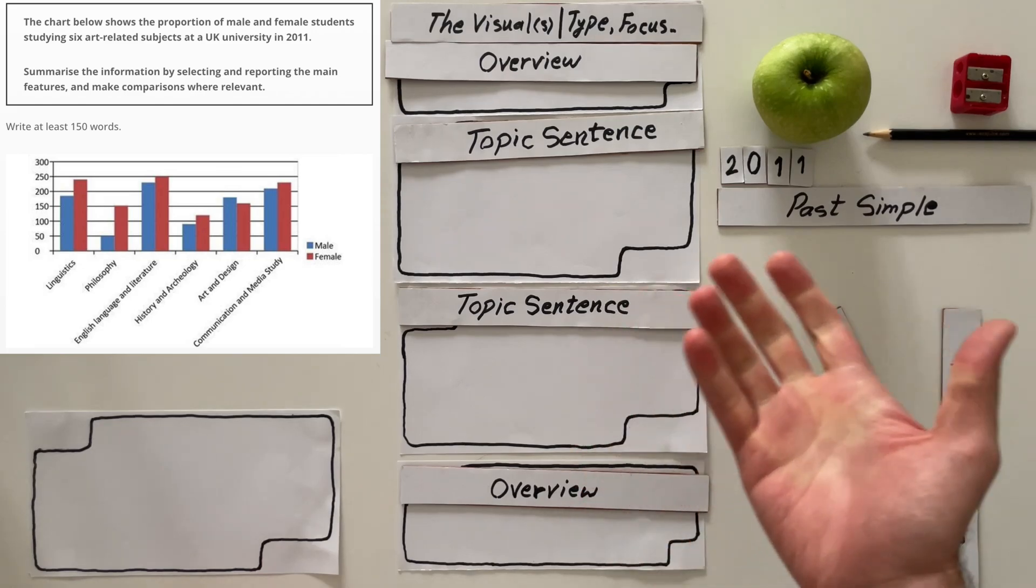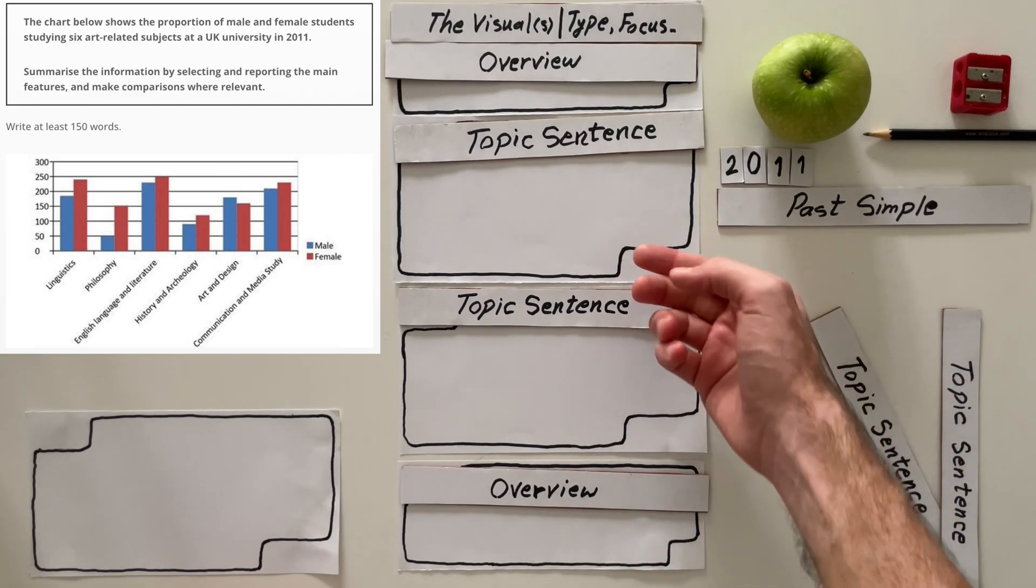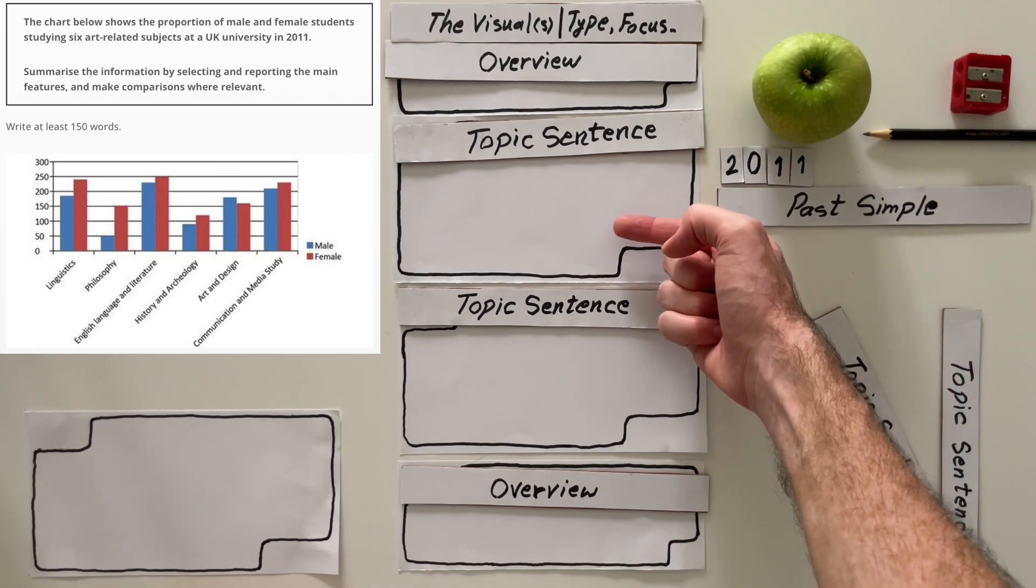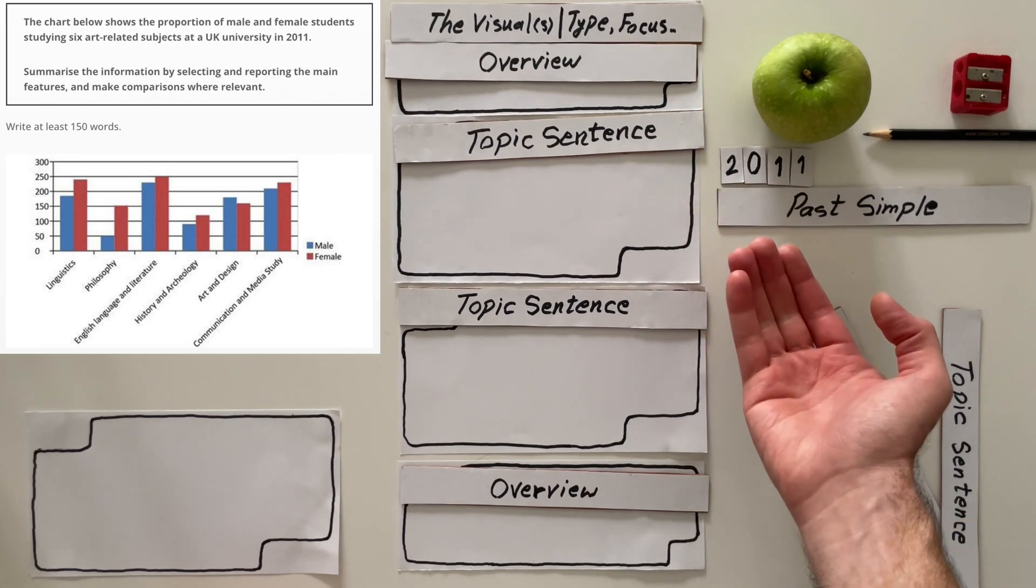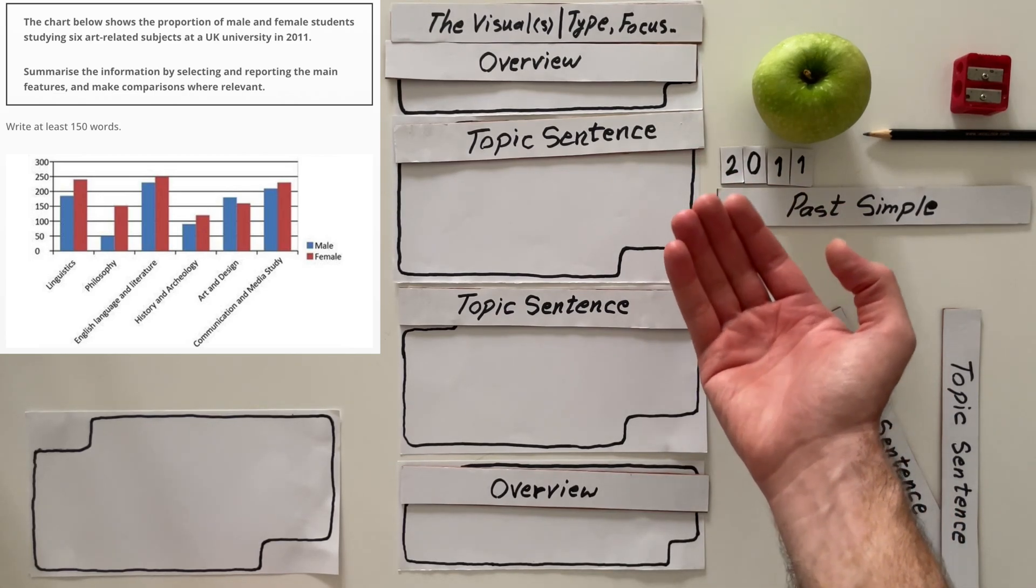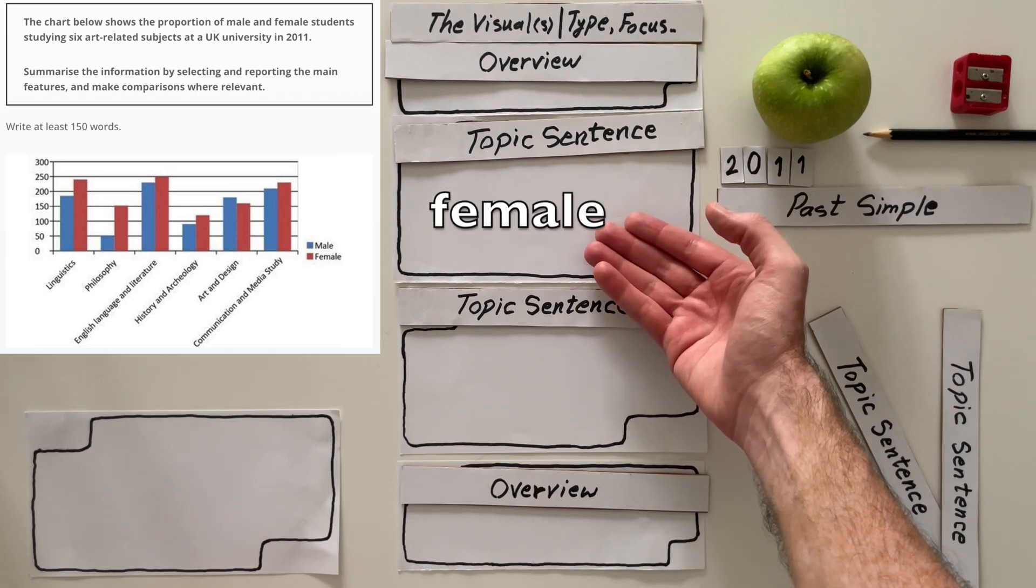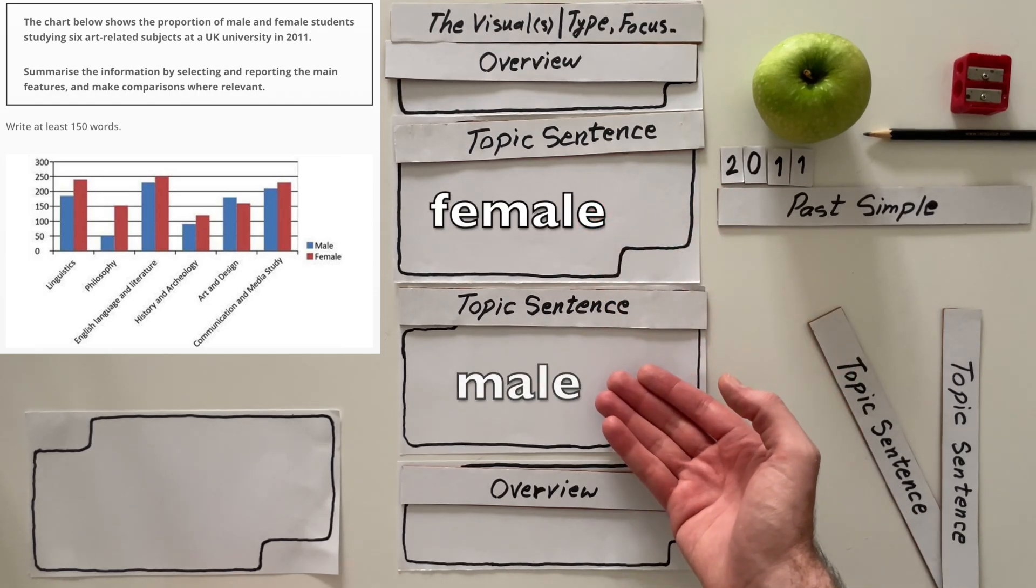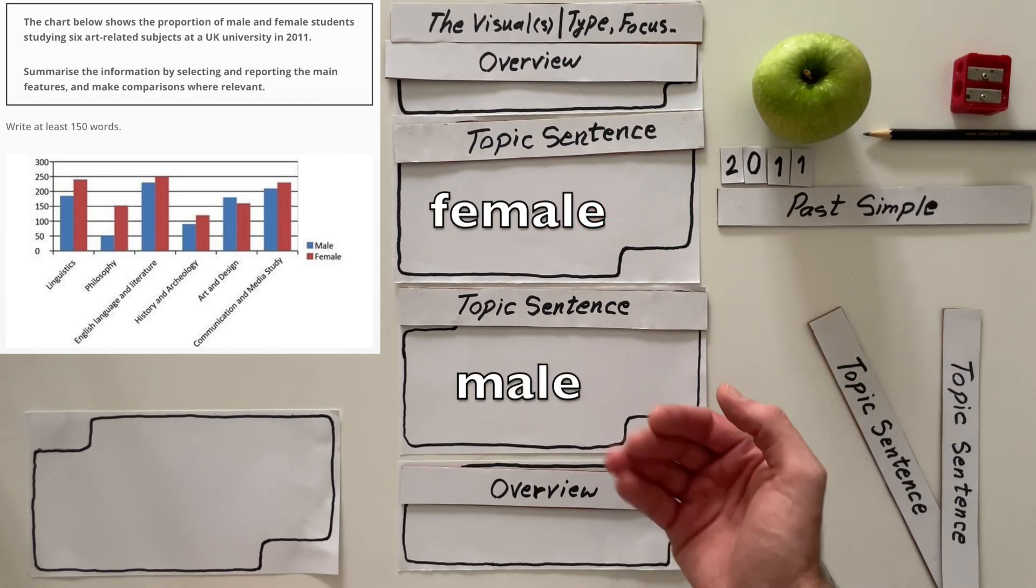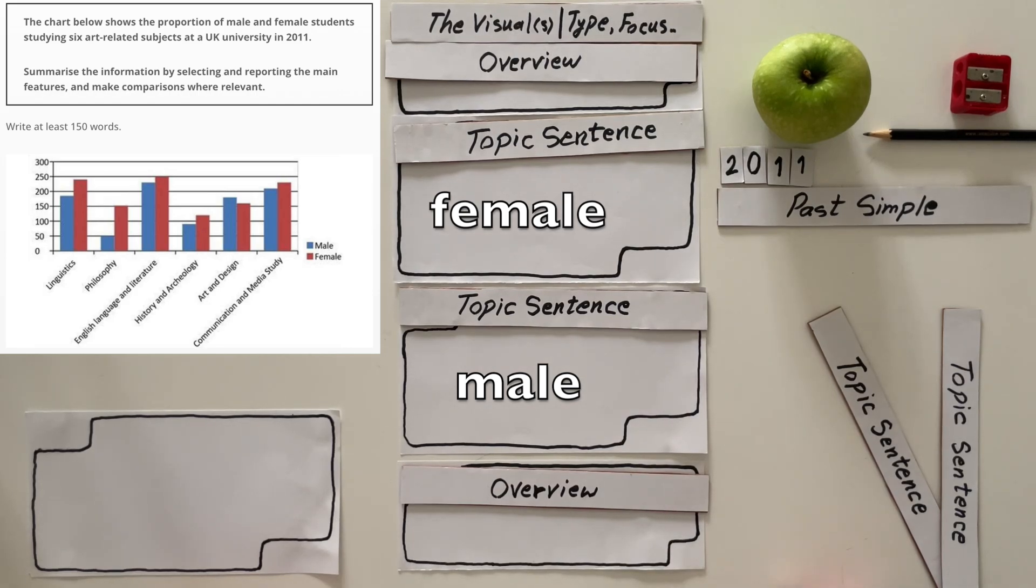You can play it safe. You can say, I'm going to focus on women first. So, I'm going to focus on female students here, and then I'm going to focus on male students in this paragraph. That's a safe strategy.